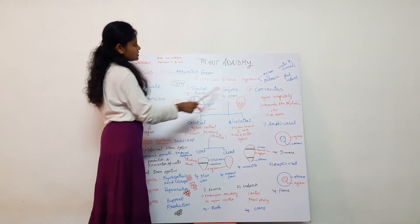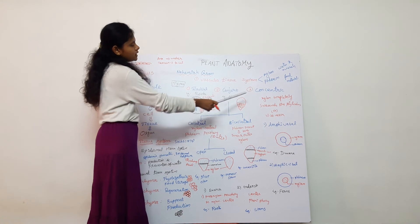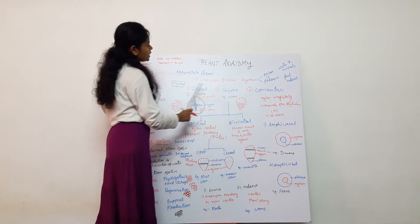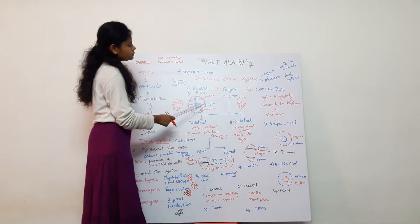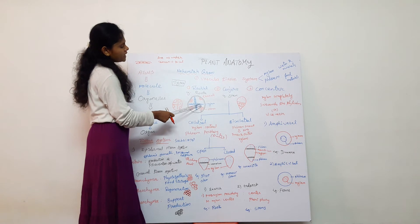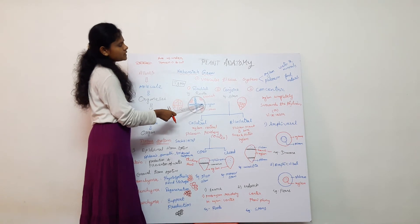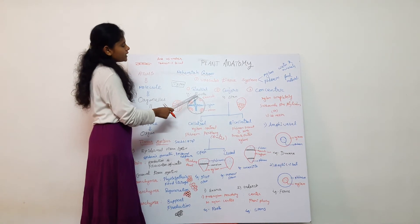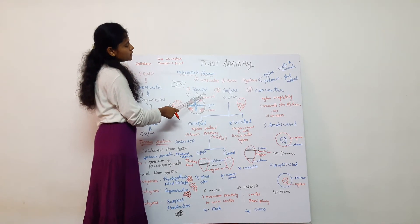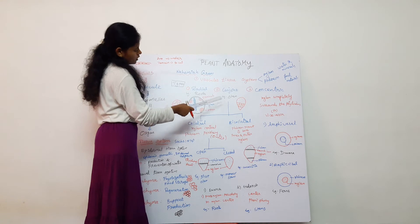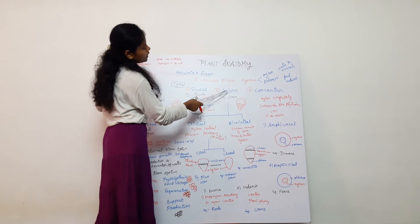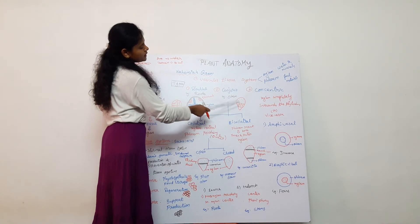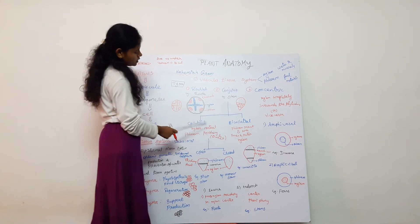The main important topic is the vascular tissue system, which has three types: radial, conjoint, and concentric. Radial means xylem and phloem are present on different radii — found in roots. Conjoint means xylem and phloem are present on the same radius — found in stems.